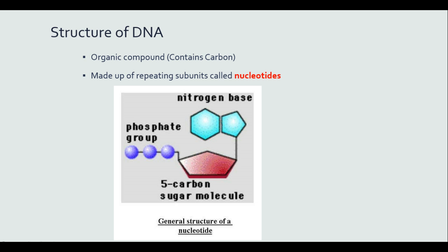DNA is an organic compound because it contains carbon. It's made up of repeating subunits called nucleotides. If we look at the general structure of a nucleotide, it consists of a nitrogen base — these are our A's, T's, C's, and G's that we went over in Chapter 2 — as well as a 5-carbon sugar and 3-phosphate groups.